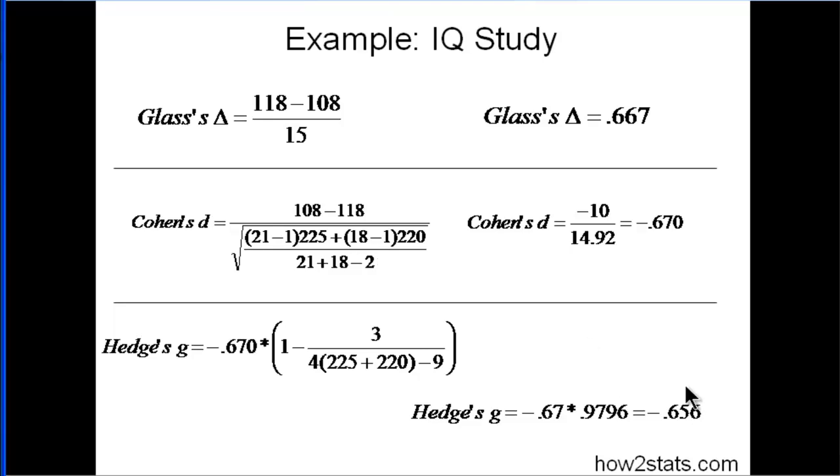And the bias comes out to be about 2%, about a 2% difference between negative 0.67 and negative 0.656. So again, why aren't we using Hedges G? It's more accurate.